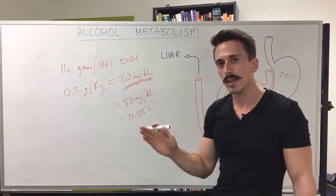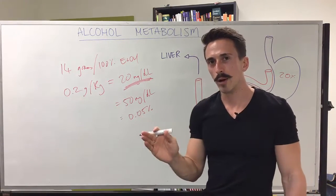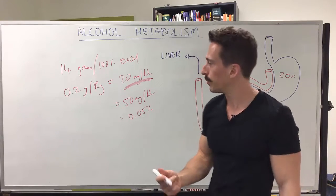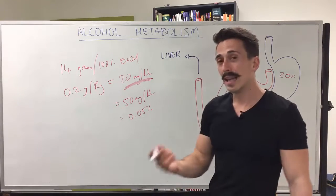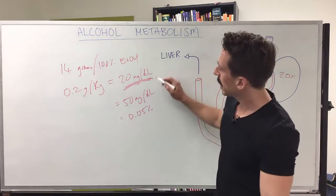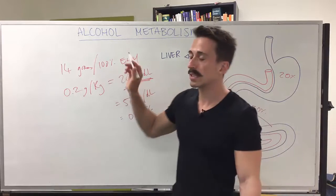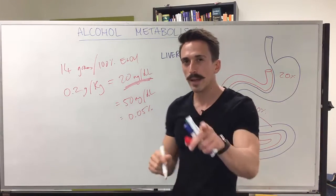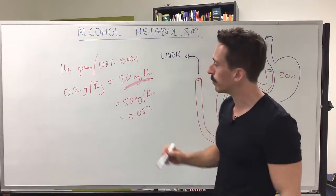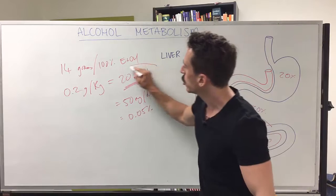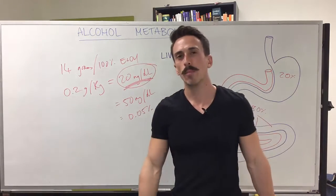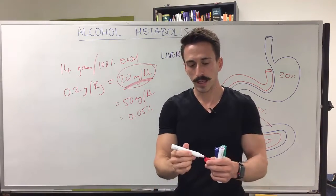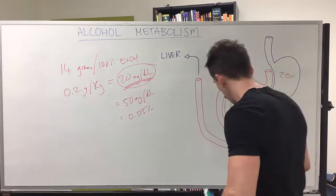How quickly does our body break down and eliminate alcohol? In actual fact, it can break down a single standard drink every hour, which means every hour you can metabolize 20 milligrams per deciliter. Hopefully that's putting things into context.